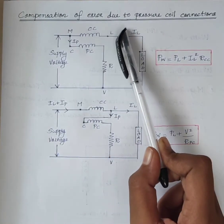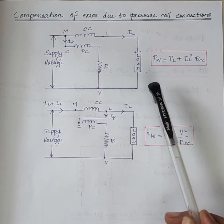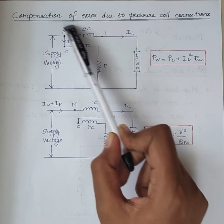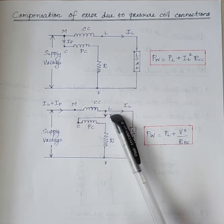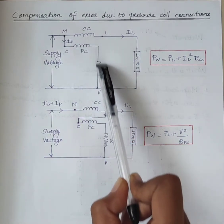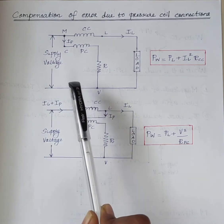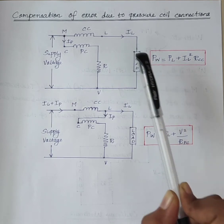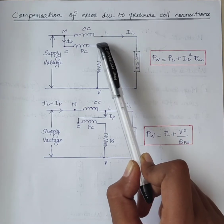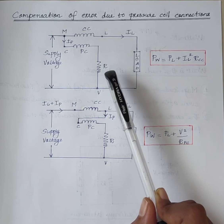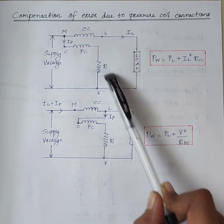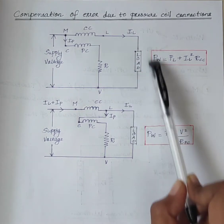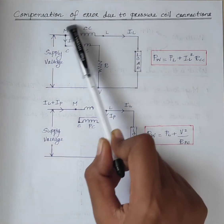The second modification is compensation of error due to pressure coil connections. There are two methods of connecting a watt meter in a circuit. The figure shows these two methods. In the first method, M and C are short-circuited, meaning the pressure coil is connected on the supply side. Therefore, the voltage applied to the pressure coil is the voltage across the load plus the voltage drop across the current coil. Thus, the watt meter measures the power loss in the current coil in addition to the power consumed by the load, so power measured equals power consumed by the load plus power consumed in the current coil.